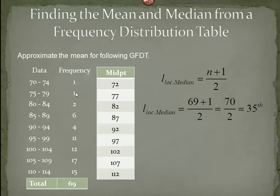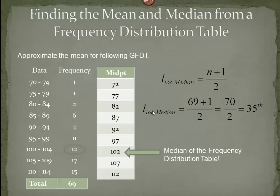In the frequency distribution table the values are already in ascending order, so we count until we get to the 35th value: 1 plus 1 is 2, plus 2 is 4, plus 6 is 10, plus 4 is 14, plus 11 is 25, and 25 plus 12 is 37. So within that class we hit the 37th number, which means 102 is the median of the frequency distribution table. Note that the median of 102 and the mean of 101.35 were very close — and the mode was also not too far off at 107. In most cases, if there are no big outliers or extremes, the median and the mean are generally close to the same number.